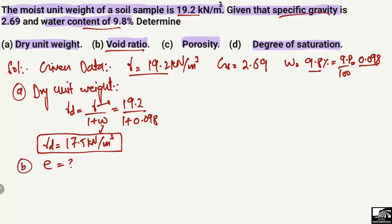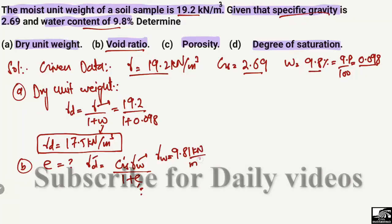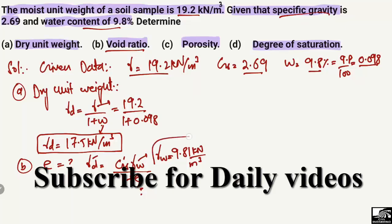The second unknown is the void ratio e. We use another formula for dry unit weight: gamma_d equals Gs times the unit weight of water divided by 1 plus e. The dry unit weight and Gs are known, e is unknown, and gamma_w is also known. Keep in mind that the unit weight of water is standard at 9.81 kilonewton per cubic meter — you should remember this value.